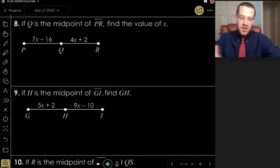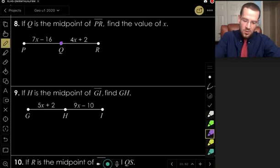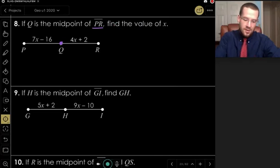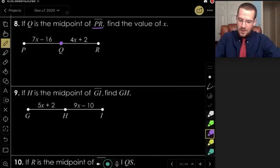Okay, here we have, if Q is the midpoint, so I'm going to mark Q here, if Q is the midpoint of the segment PR, so Q is the midpoint of this whole segment here, we want to find the value of X. Okay, so here we go.